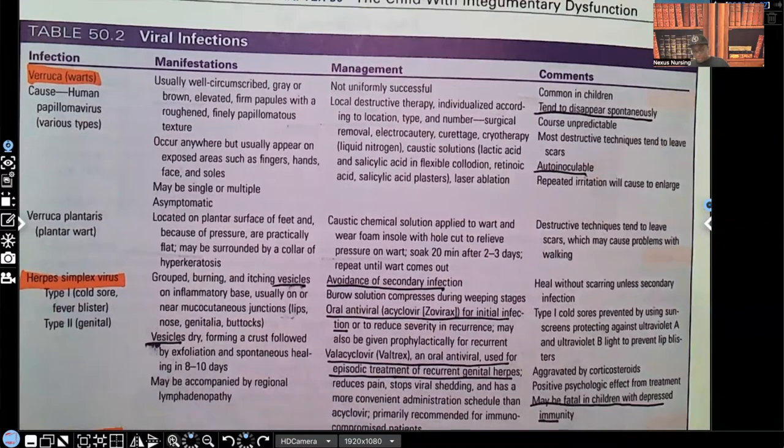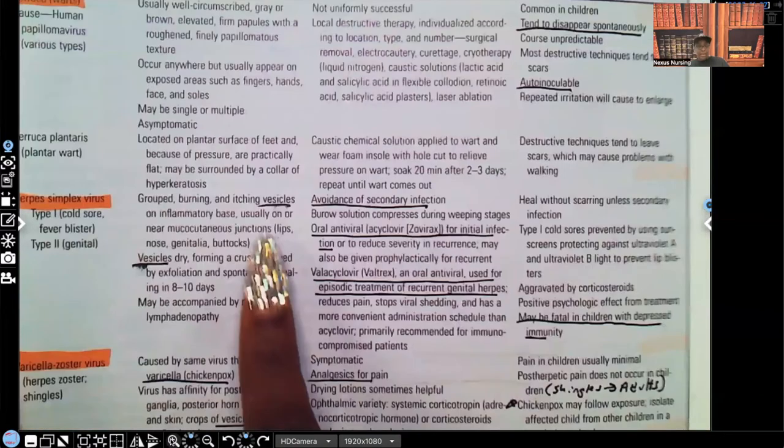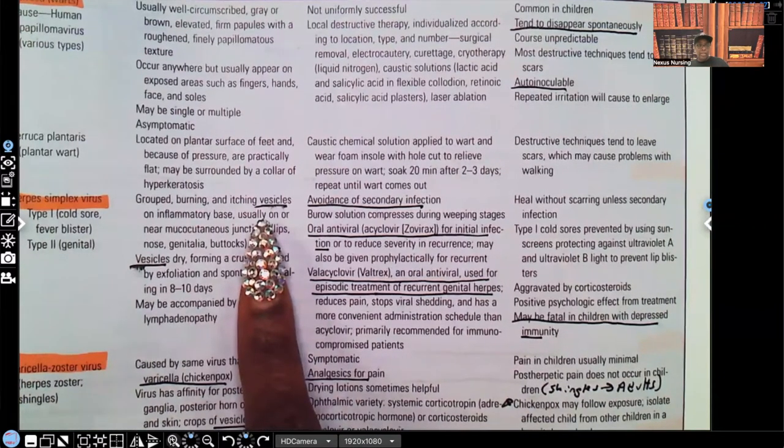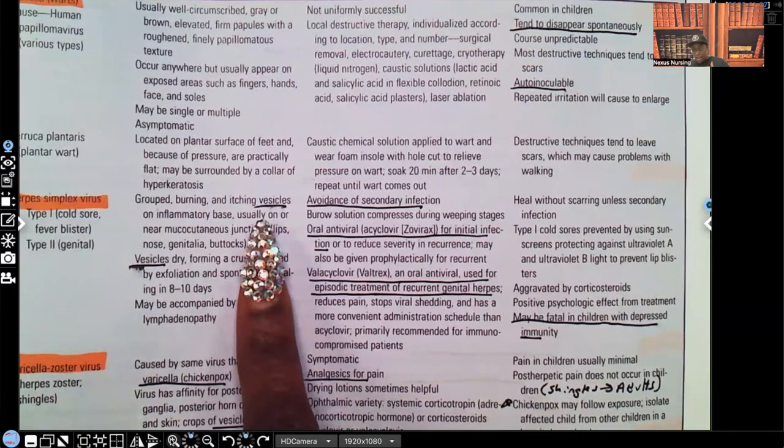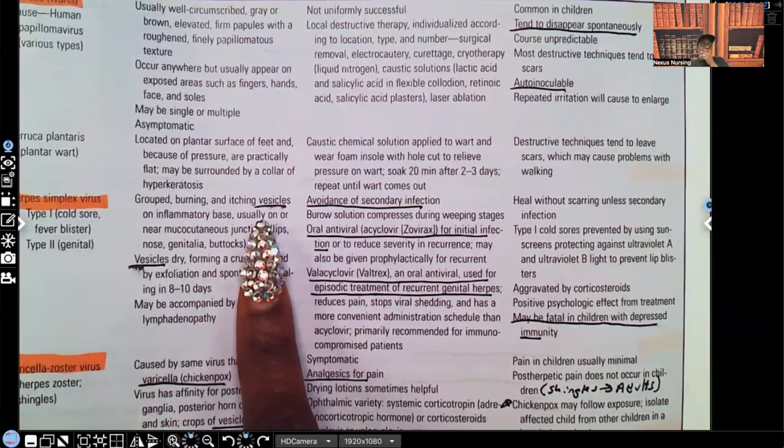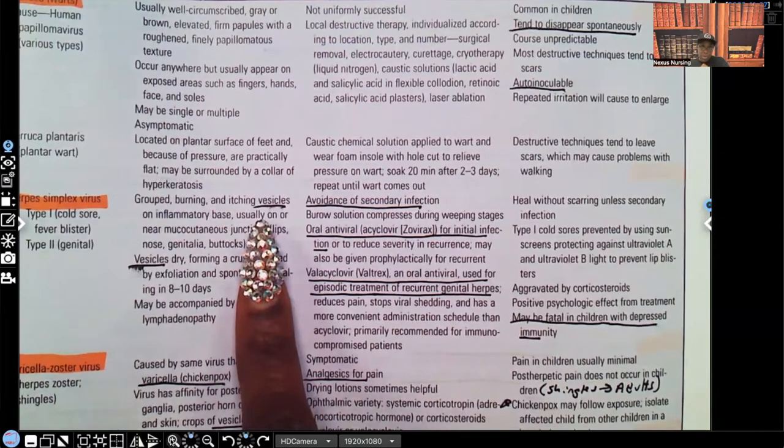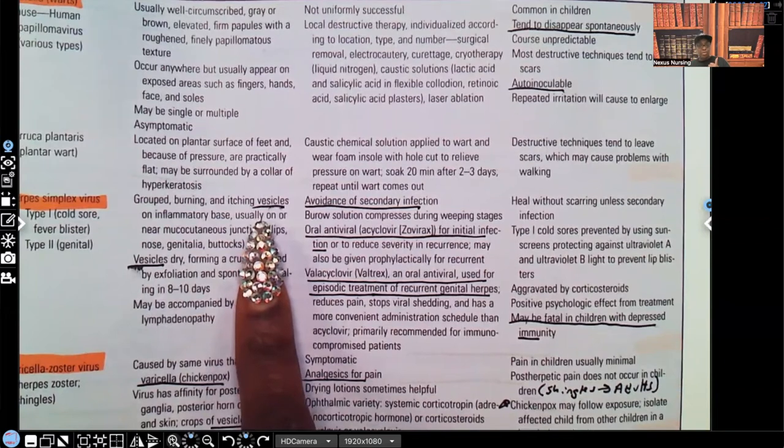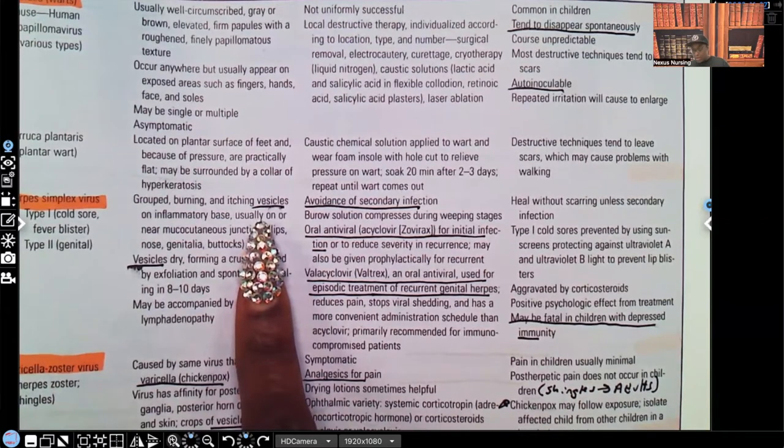Herpes simplex virus. Vesicles. This is group burning and itching vesicles on inflammatory base. Now, I underlined the word vesicles because not all the time, but most of the time when you see that description of vesicle, think viral. I want you to think viral. That's why I underlined it for you.